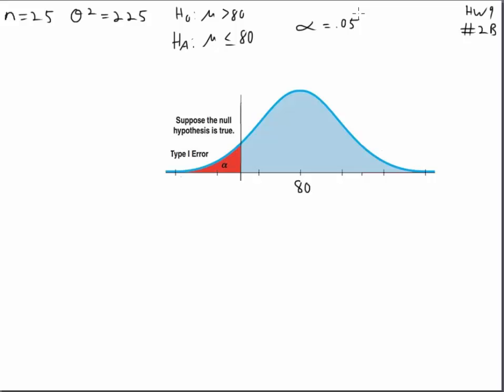And the first thing you'll probably do is look up and say, okay, my critical value, z star, I always find critical values in a table, and it's going to be 1.645.